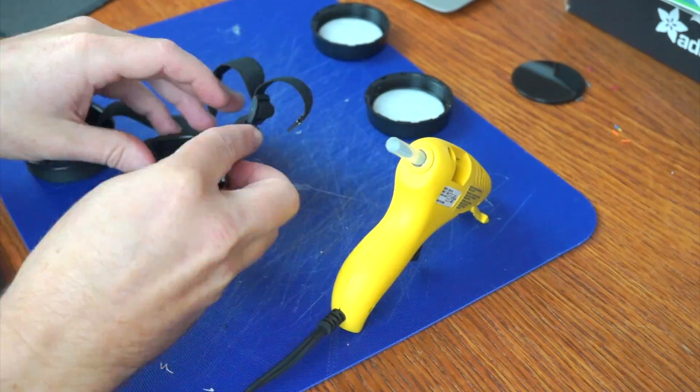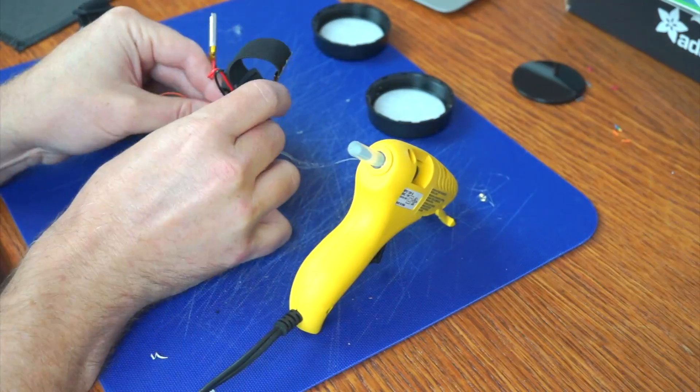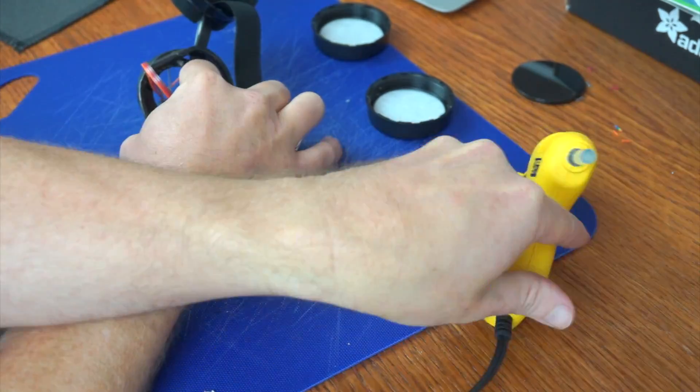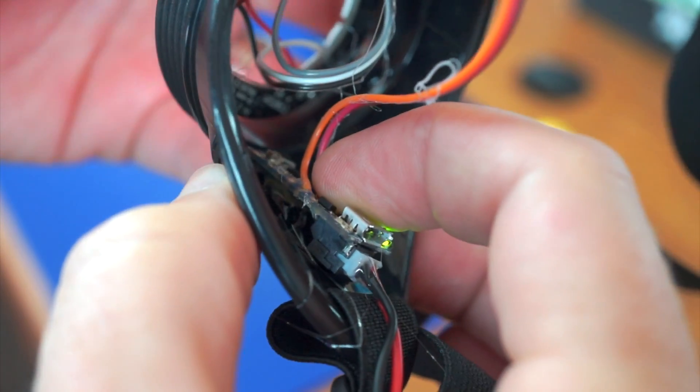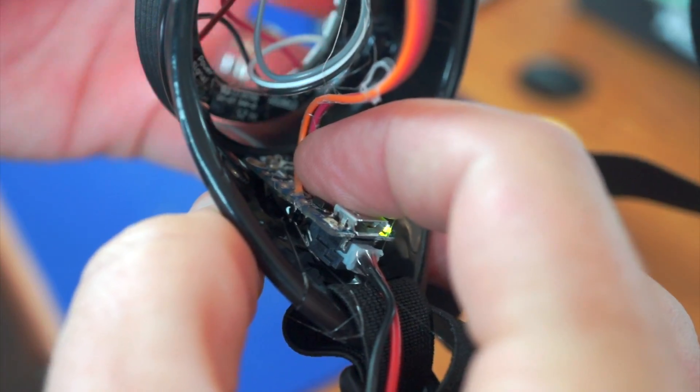The other bit of hot glue I'm going to use here is to glue the trinket down to the side of the goggles so that all the components can fit inside of the goggles without sticking out.